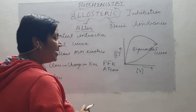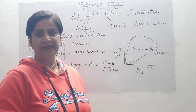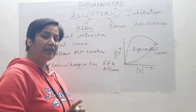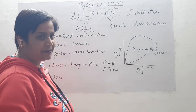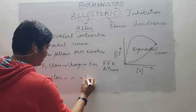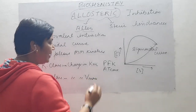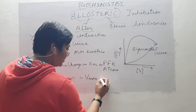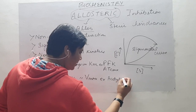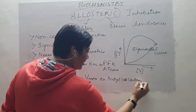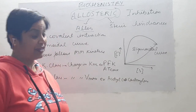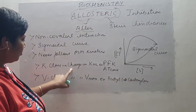Phosphofructokinase is the rate-limiting enzyme of glycolysis, and ATCase is the rate-limiting enzyme in pyrimidine biosynthesis. For V class, the change is in Vmax or velocity. An example of V class is acetyl-CoA carboxylase.